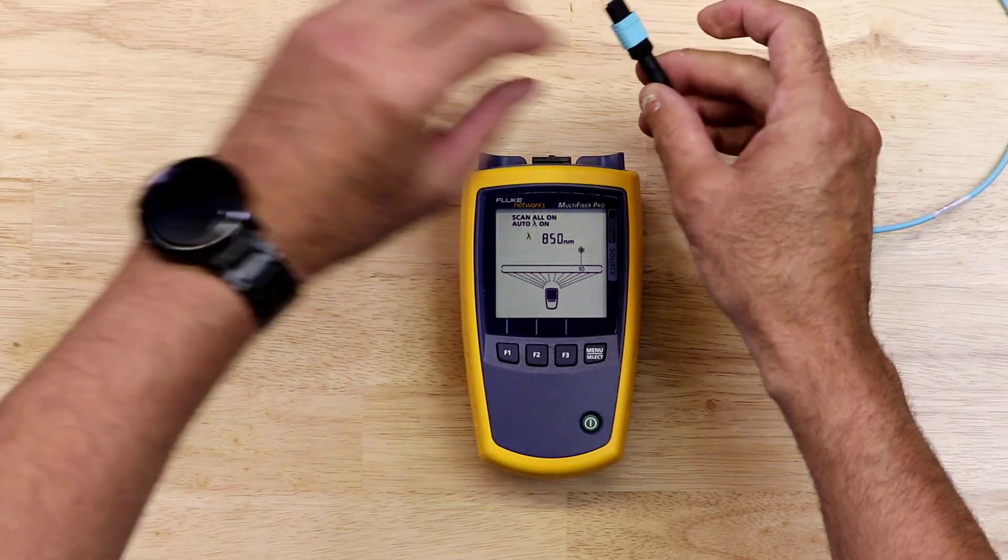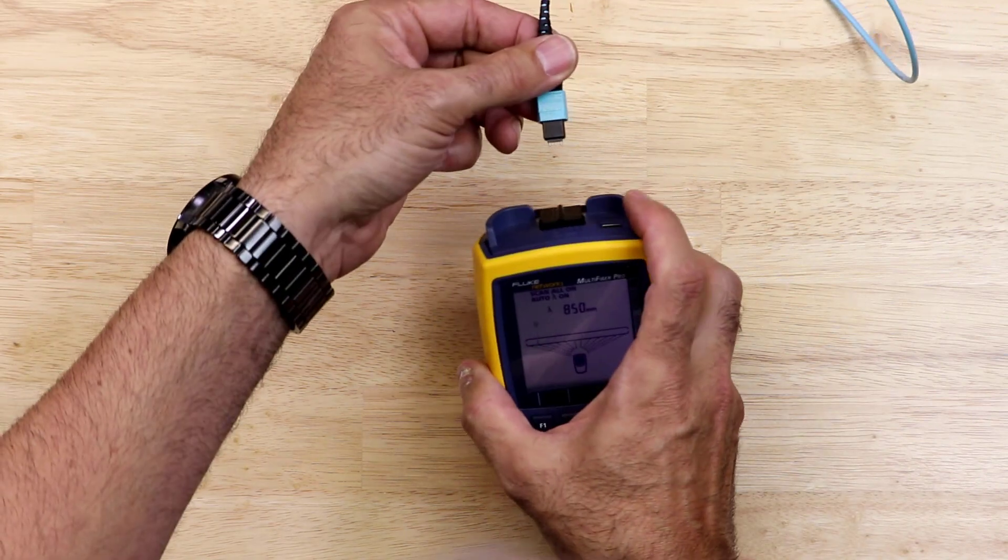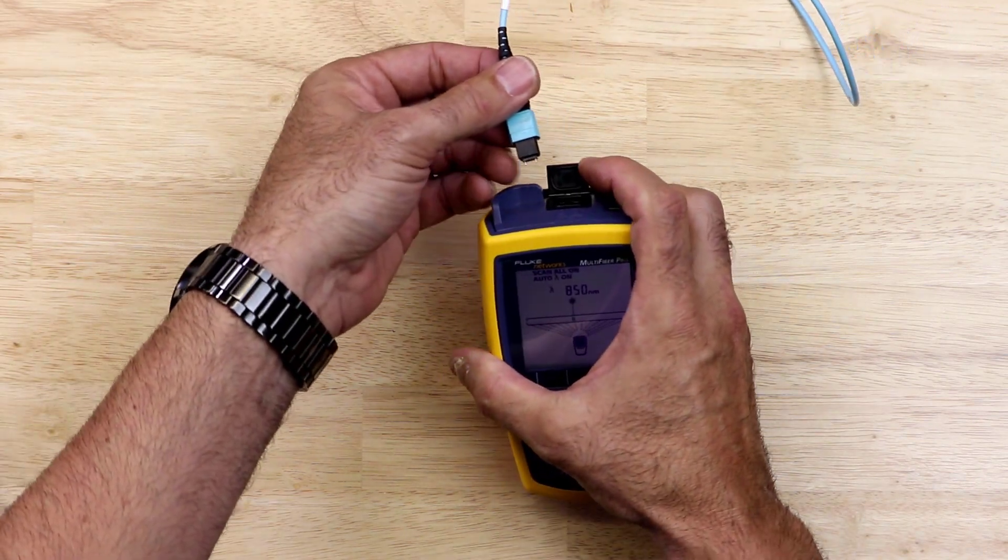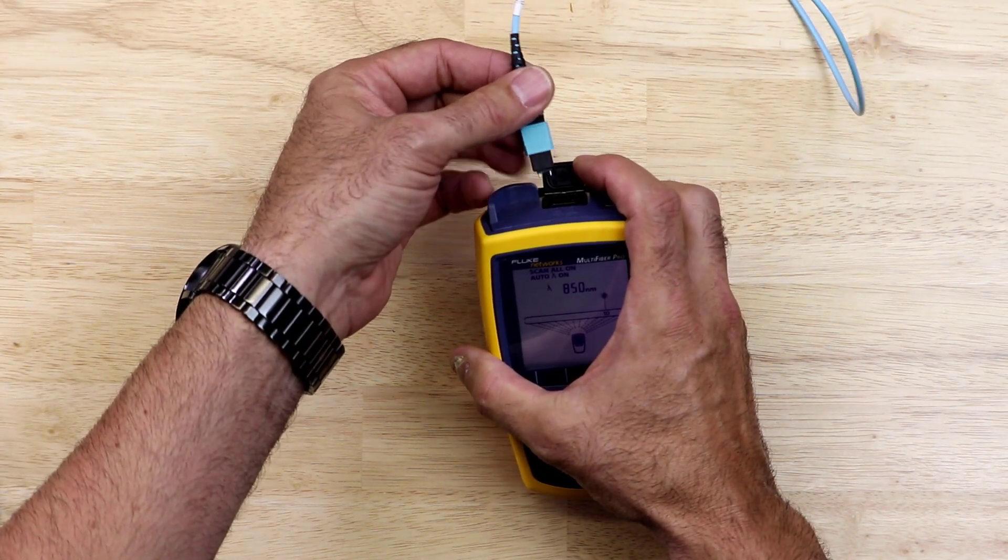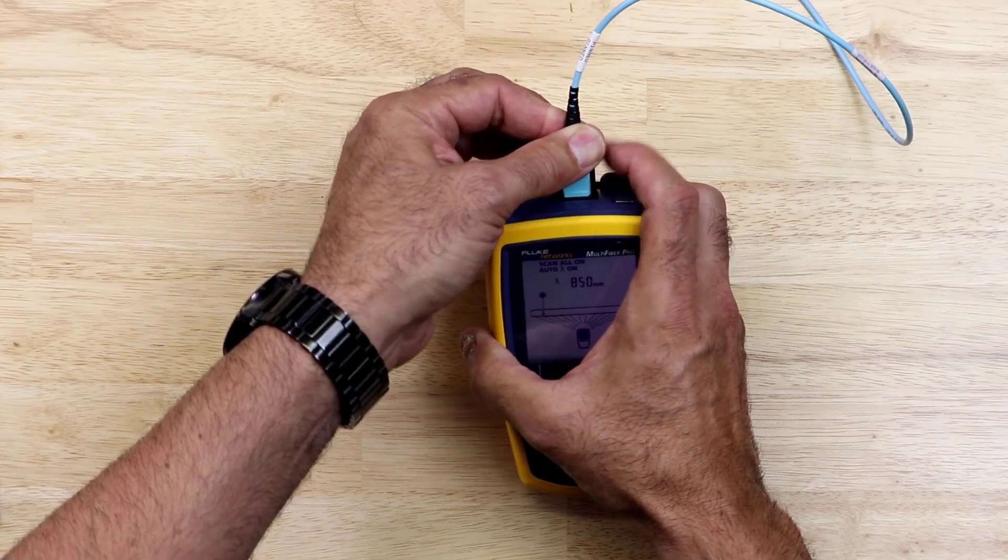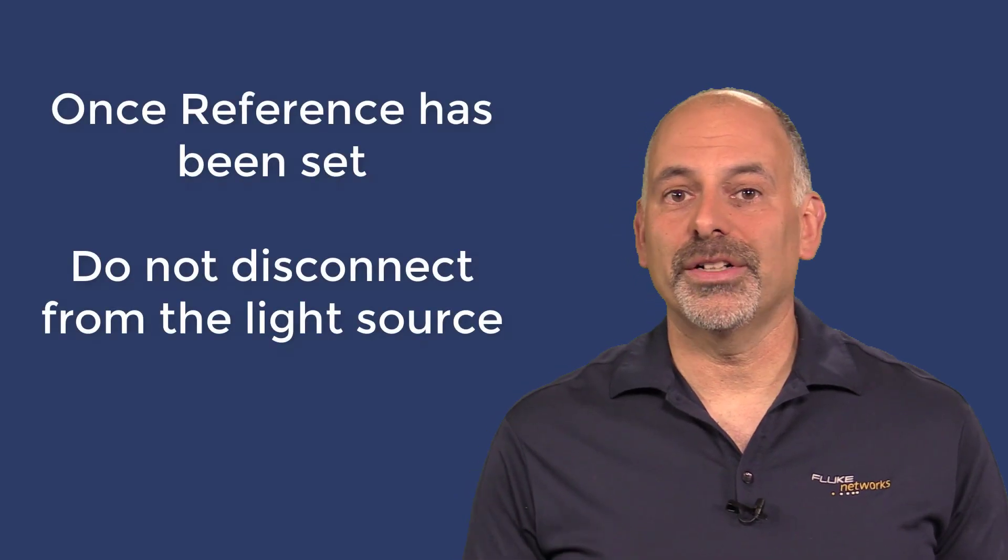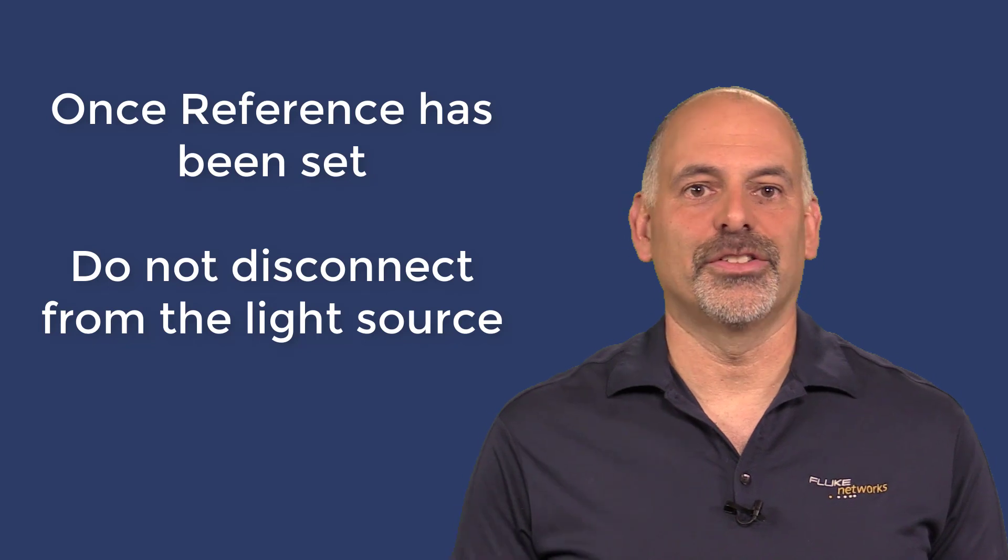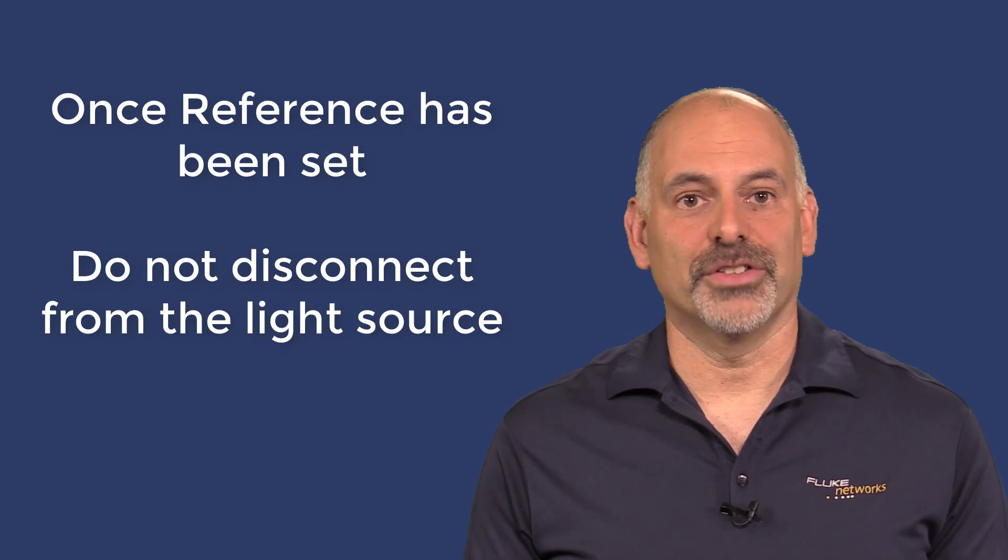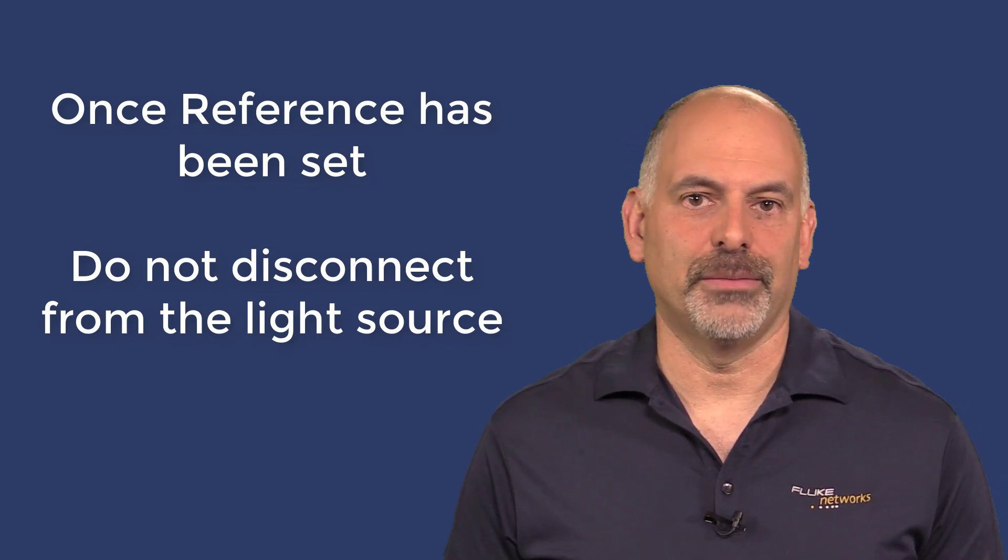I will connect one end of this cable to my light source. I'll open the cover and insert the MPO connector into the connector on the top of the light source. It is important to note that once we have set reference, we do not want to disconnect this connector from the light source. If we do, we must go through the reference process again.